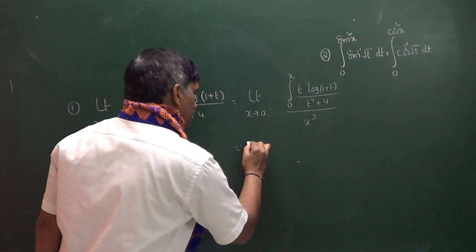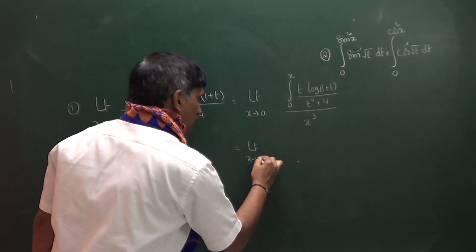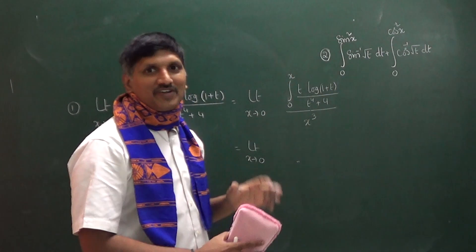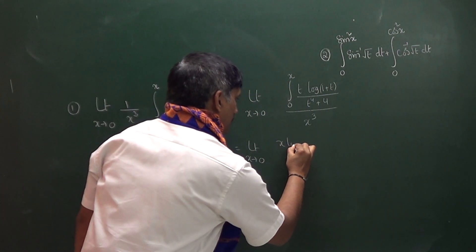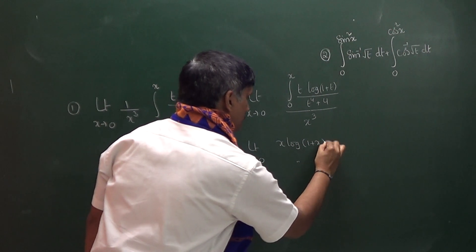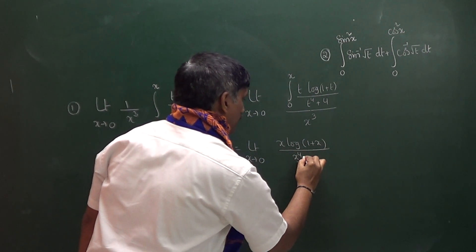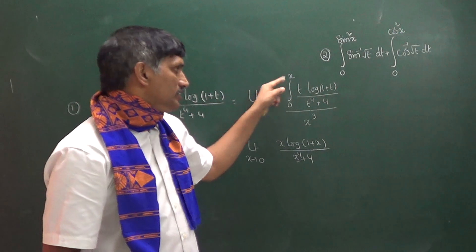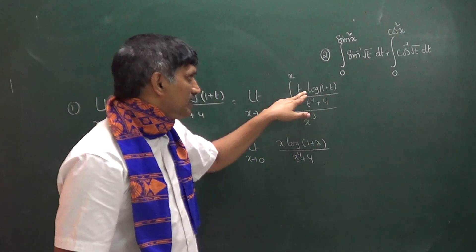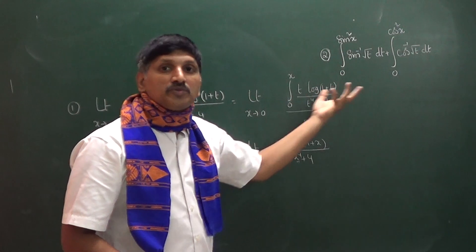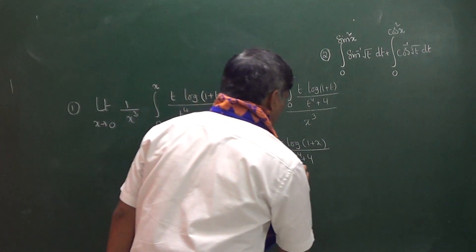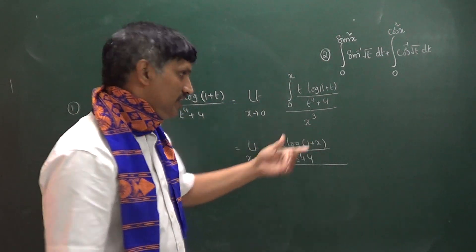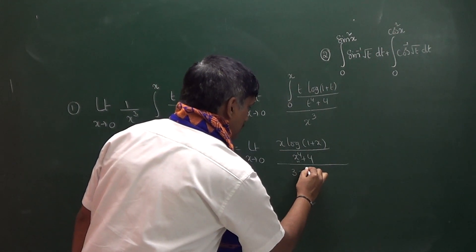Differentiating the numerator: limit x tends to 0. In place of t we substitute the upper limit, so we get x · ln(1 + x) / (x⁴ + 4), multiplied by the upper limit differentiation. The lower limit is 0, so that term vanishes. Now differentiating the denominator: the differentiation of x³ is 3x².